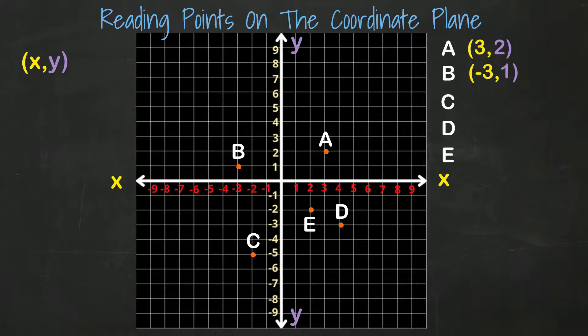What are the coordinates for point C? Well, let's start from the origin. We move two spaces to the left. Then we move down five spaces. The coordinates for point C are negative two and negative five.